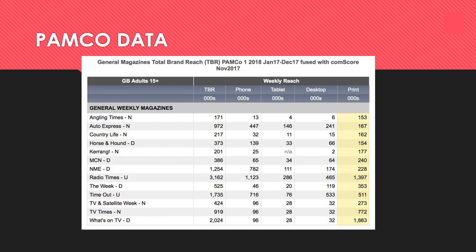Here's an example of PAMCO data looking at magazines released weekly — how they are accessed, whether digitally downloaded or purchased in print, with statistics shown in thousands. For example, Angling Times sells 153,000 printed copies each week in the UK. By contrast, the Radio Times has over a million readers, covering radio and TV programmes and various stories, making it a much more mainstream audience.